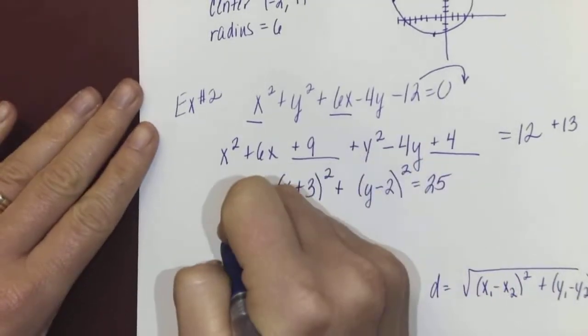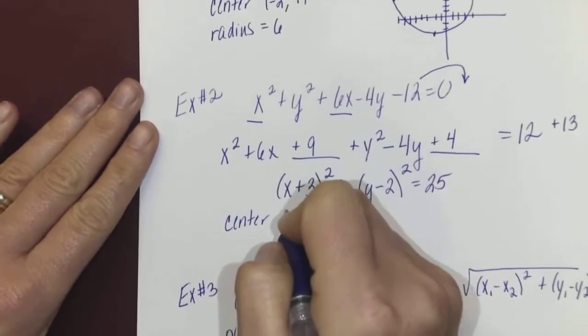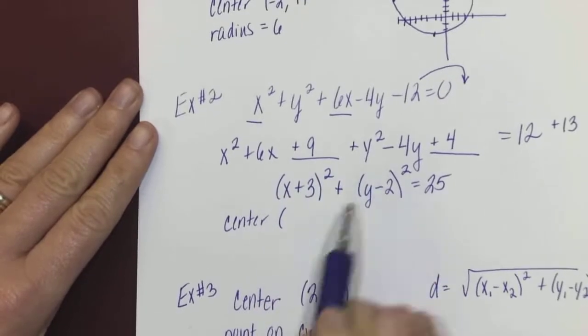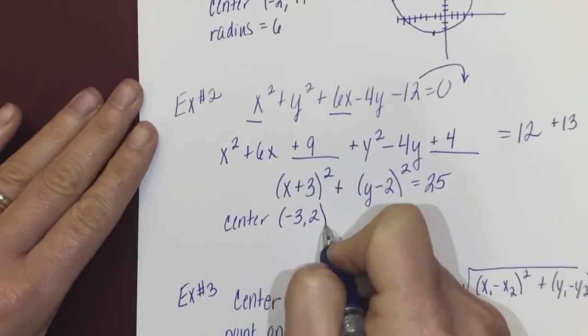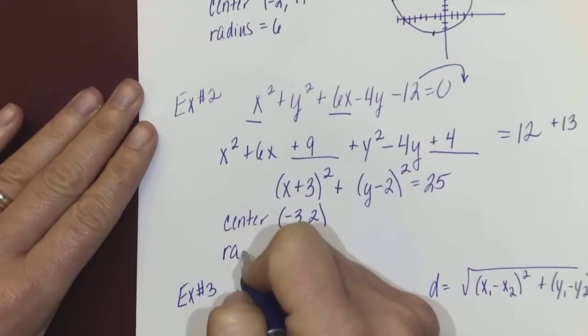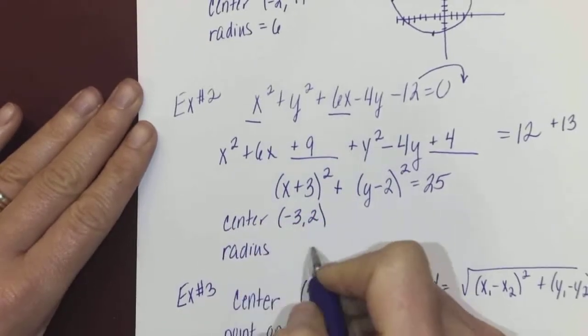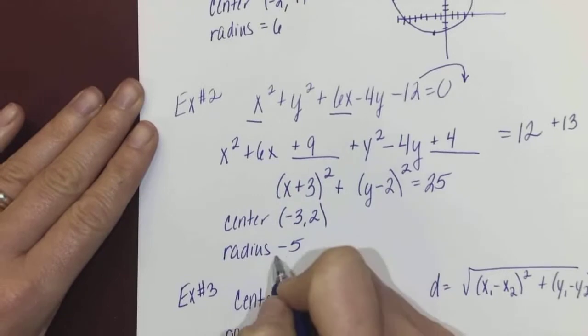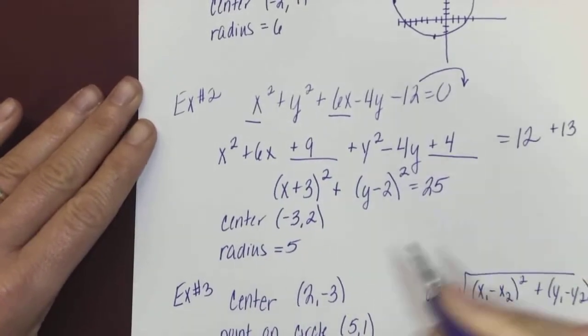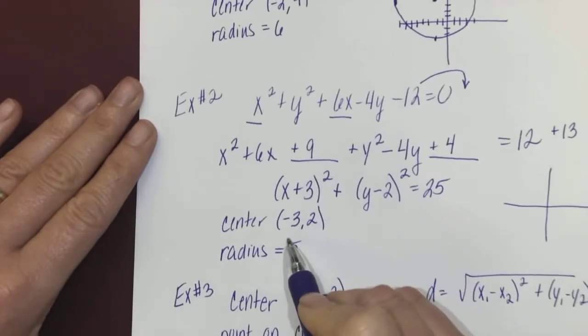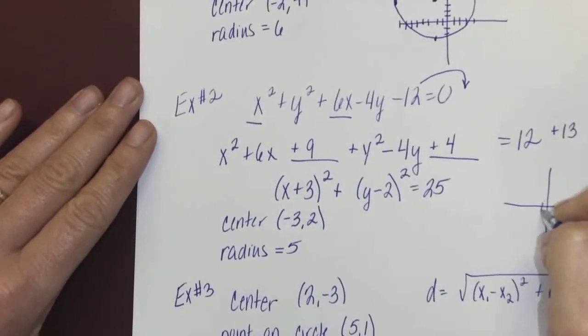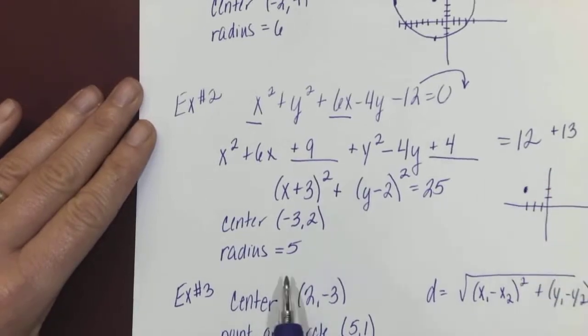I'll list the center, which again would be the opposite of what's in parentheses, which would be (-3, 2). My radius would be 5 because that's the square root of 25. So now I'm going to draw a quick sketch. Center is (-3, 2)—3 to the left and 2 up.